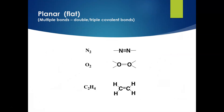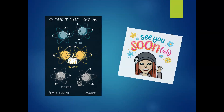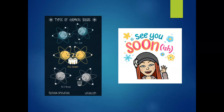Finally, we have our planar or flat molecules, which have multiple bonds — some double, some triple covalent bonds. For nitrogen we count one through eight in the triple bond representation, and for O2 we also count one through eight. We've also got two carbons with a double bond between them, counting one through eight. Thank you for watching our video on covalent molecules, and I look forward to using the Molymod kits in class to demonstrate this further.